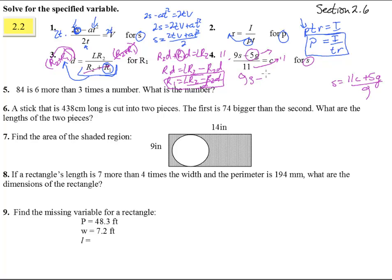We get 9s minus 5g equals 11c. Then we're going to add the 5g to both sides. So 9s equals 11c plus 5g. And then divide by 9 and we have our answer.